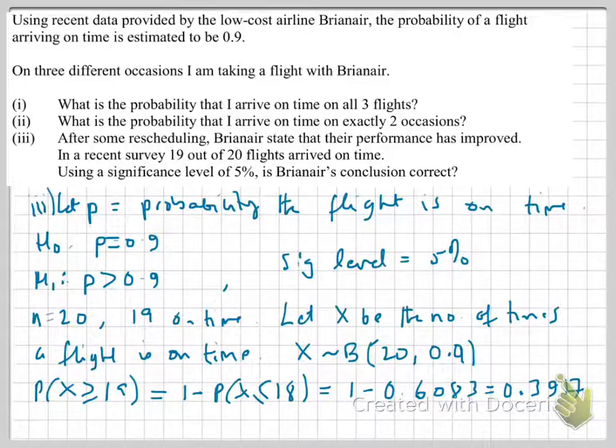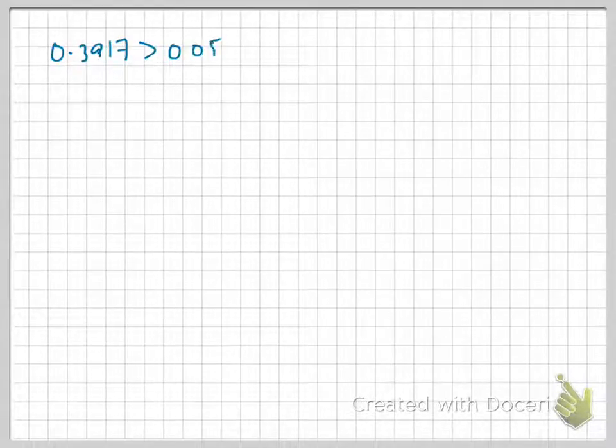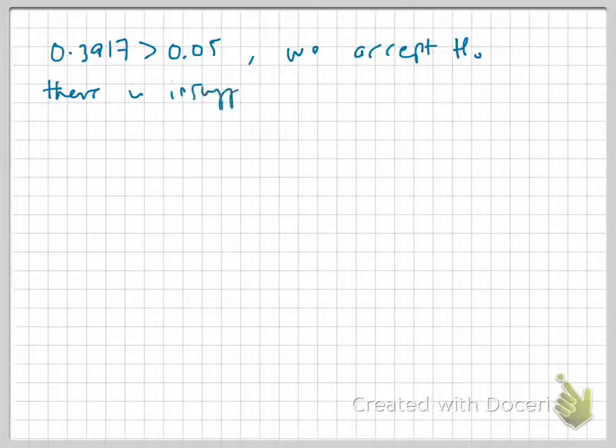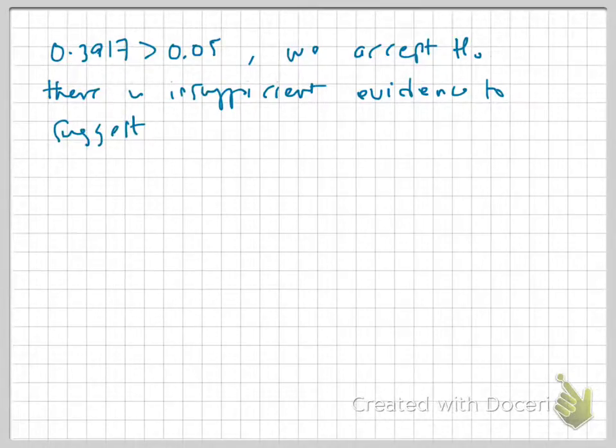Now, 0.3917 is clearly greater than our significance level. So, let's write that down. 0.3917 is greater than 0.05. Therefore, we accept H0. And we should conclude with a sentence to say there is insufficient evidence to suggest that Ryanair's performance has actually improved.